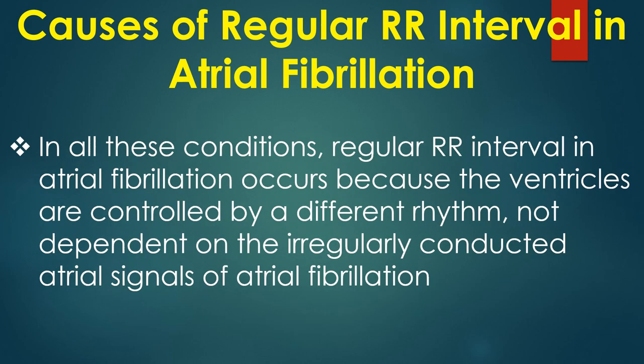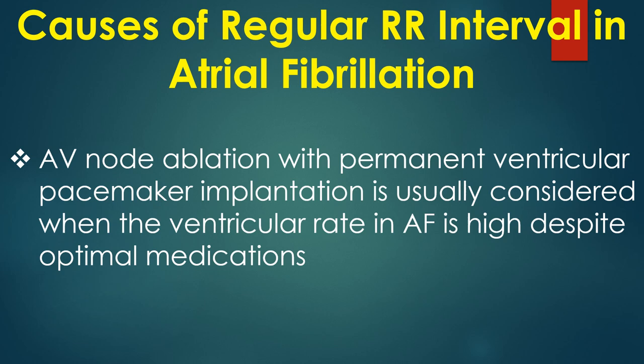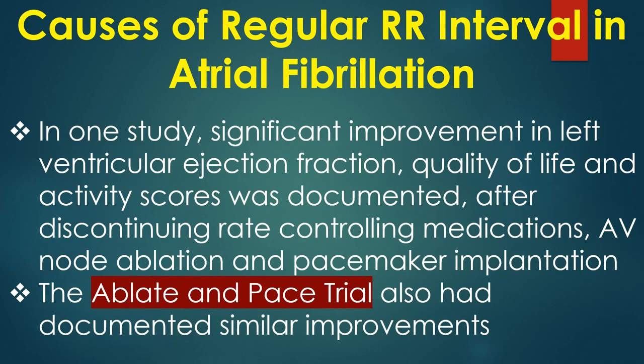In all these conditions, a regular RR interval in atrial fibrillation occurs because the ventricles are controlled by a different rhythm not dependent on the irregularly conducted atrial signals of AF. AV node ablation with permanent ventricular pacemaker implantation is usually considered when the ventricular rate in AF is high despite optimal medications. One study documented significant improvement in left ventricular ejection fraction, quality of life and activity scores after discontinuing rate-controlling medications, AV node ablation and pacemaker implantation. The ABLATE and PACE trial documented similar improvements.